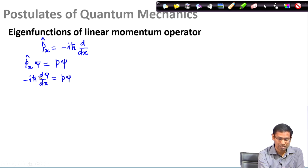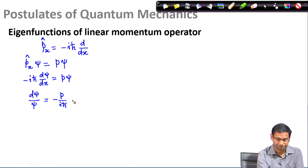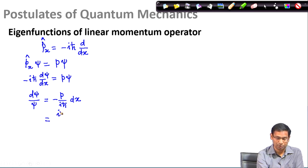I collect the psi terms on one side: I keep d-psi and bring psi from the right-hand side, taking the remaining quantity to the right-hand side. If you see this, minus 1 divided by i — since minus 1 is i-squared, i-squared divided by i is just i. So I can simplify the right-hand side as i times p divided by h-bar times d x. Now I am going to integrate both the left-hand side and the right-hand side.